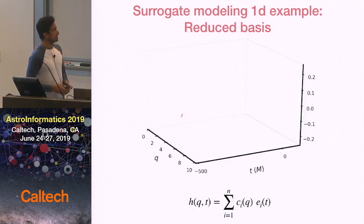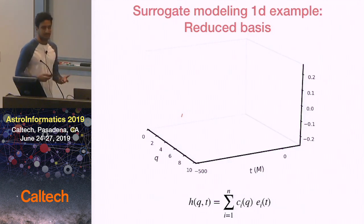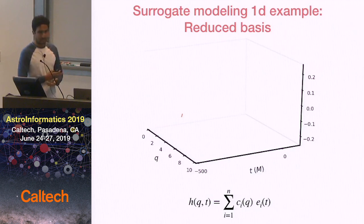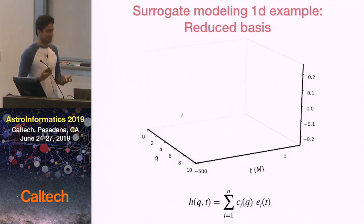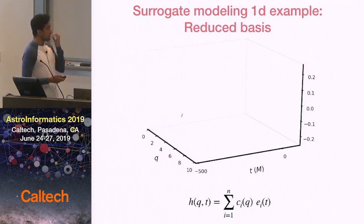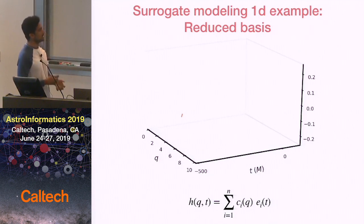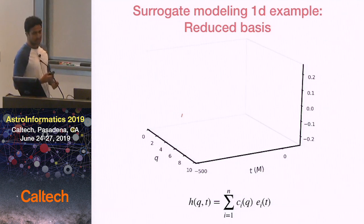That's where surrogate modeling comes in. The idea is you take a bunch of numerical relativity simulations, interpolate between all of them, and build a fast approximant. Before I go into the particulars of the model that we built, I'll give a very simple example of how this works.